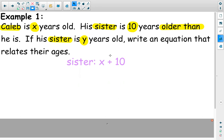So the sister's age is x plus 10. It's Caleb's age plus 10 more years. And I can ask myself and see if that makes sense. If Caleb was 5 years old, his sister's 10 years older, that would make her 15 years old. Well, if x equals 5, 5 plus 10 equals 15. So my expression makes sense.